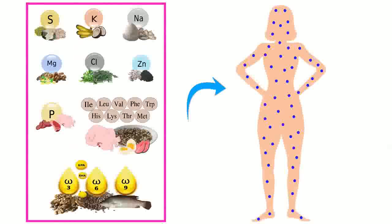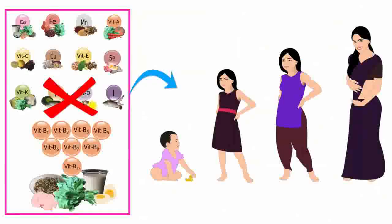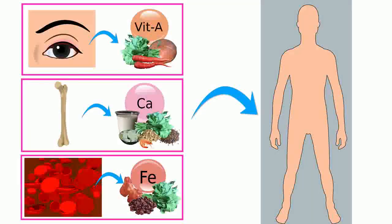Therefore, type 2 nutrients are present in all body tissues. During a type 1 nutrient deficiency, the body continues to grow normally. The body takes this nutrient from the specific tissues in which it is stored.